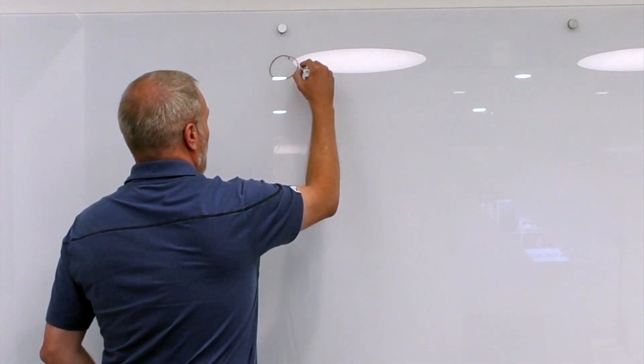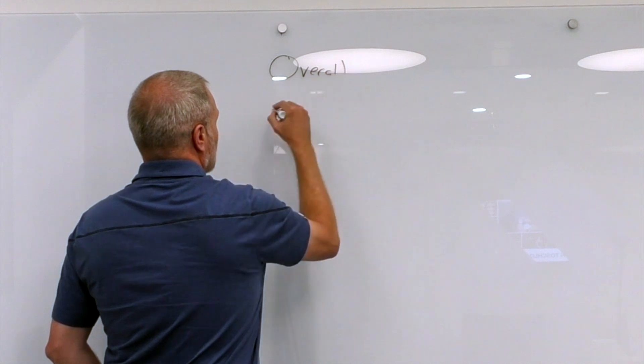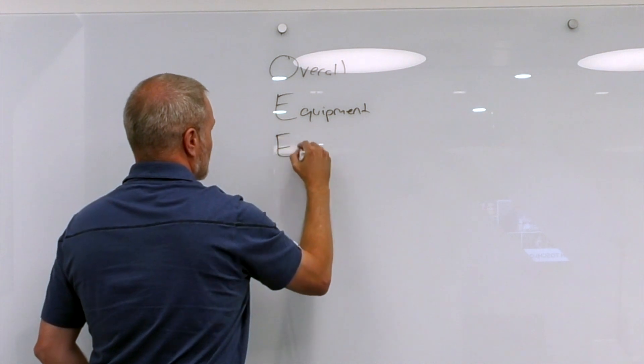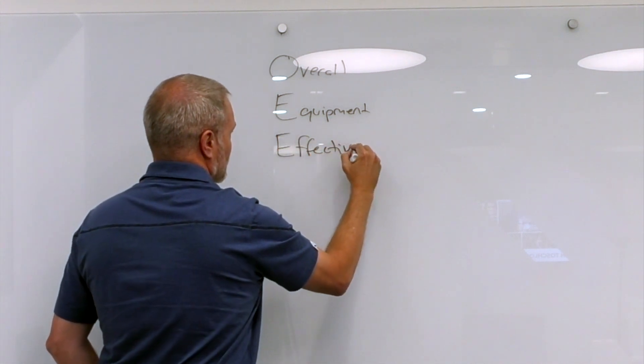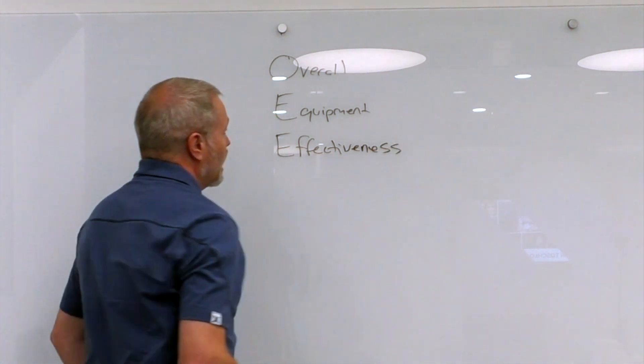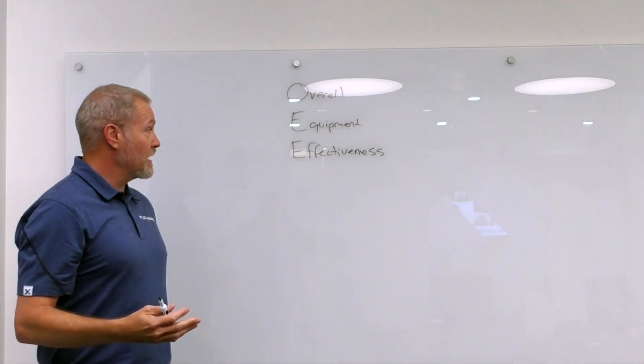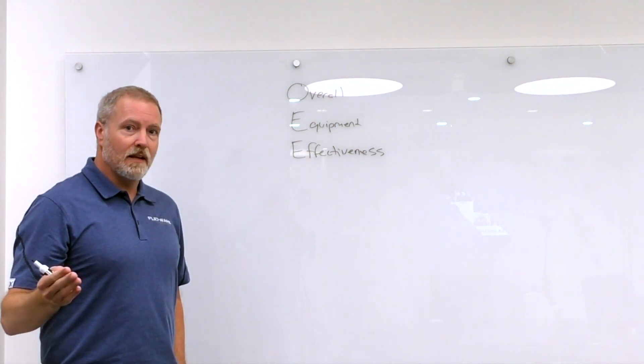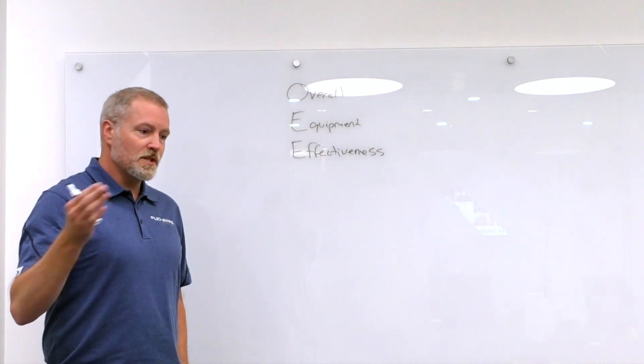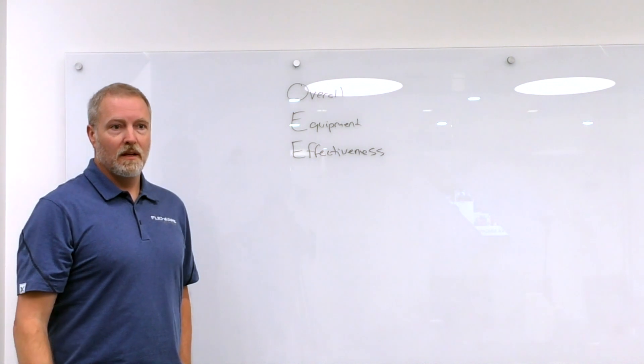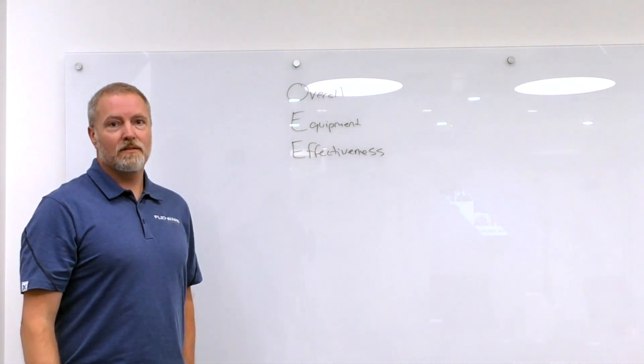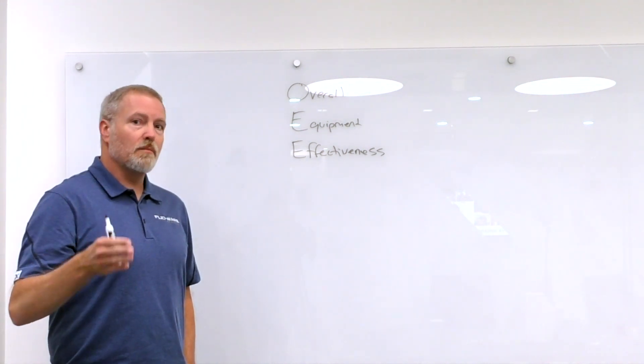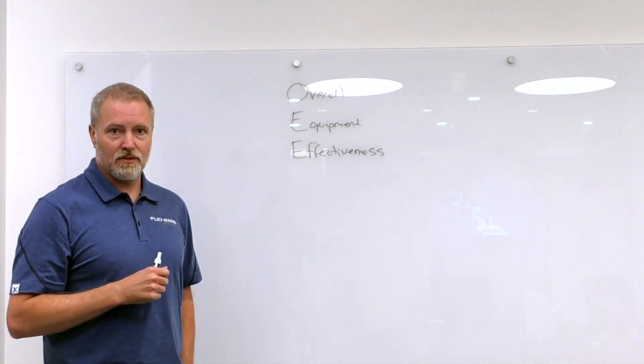OEE stands for Overall Equipment Effectiveness, and it's ultimately a measure of productivity of a manufacturing process or an individual machine. What OEE is good at is giving you a benchmark of how well your machine or line or plant is performing compared to other machines, lines, or plants.